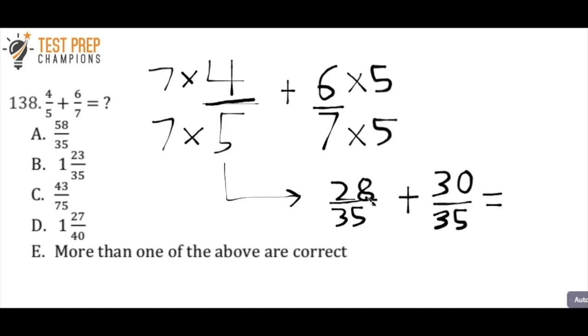And so now what I'm going to do is I'm going to add up these numbers. So 28 plus 30 is 58. But here's the trick, I don't want to add the bottom numbers. So I don't want to do 35 plus 35. I just leave the 35 right here. So it's 58 over 35. So A is going to be one of my answers here. But I want to double check and see because he says more than one of the above are correct.